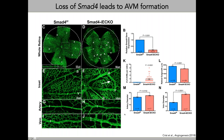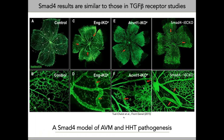We felt we had a very nice model of AVM pathogenesis using SMAD4 as a knockout. These results are very similar to other TGF-beta receptor studies, in particular Helen Arthur's work showing that when you knock out endoglin or ALK1, you also form AVMs in a very similar manner using the retinal vasculature. We then wanted to see how similar SMAD4 knockout was to other HHT models in terms of cellular and molecular defects.